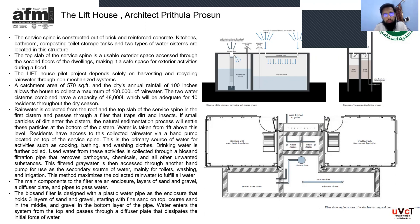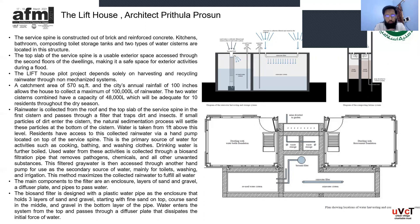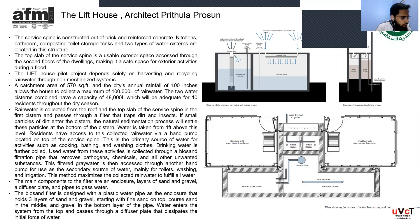A biosand filter is used for re-utilizing gray water. The biosand filter has three layers: fine sand on top, coarse sand in the middle, and gravel at the bottom. Water enters from the top and passes through a diffuser plate before filtering through the layers.